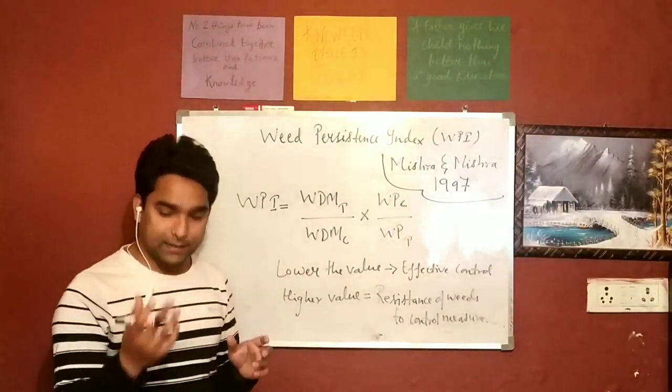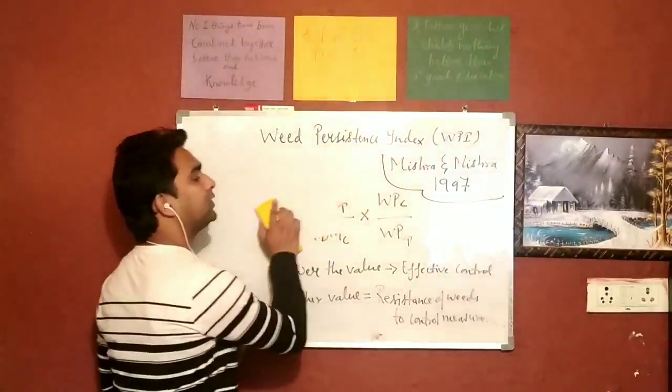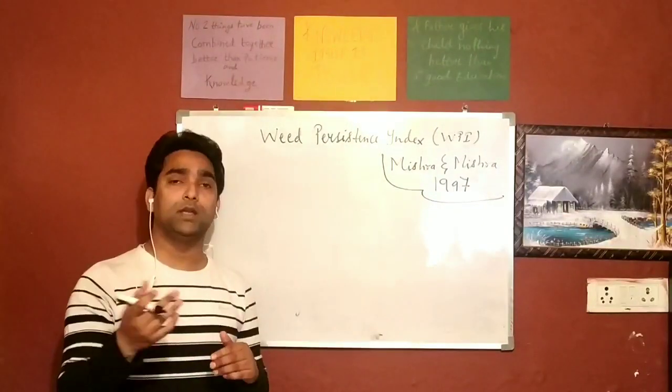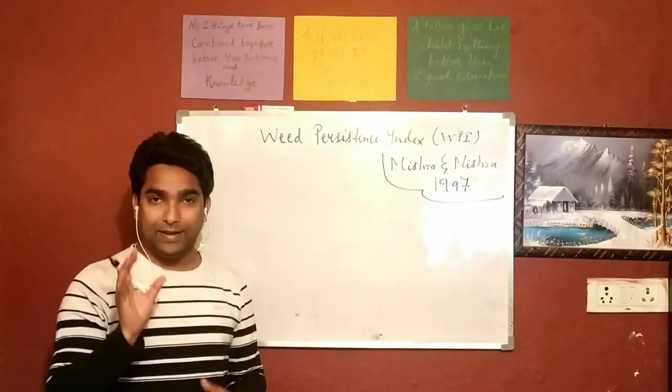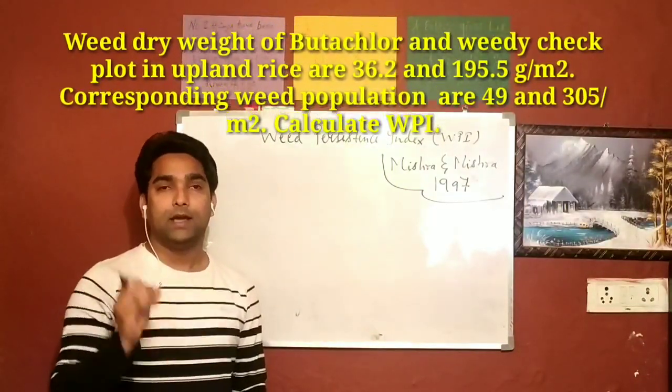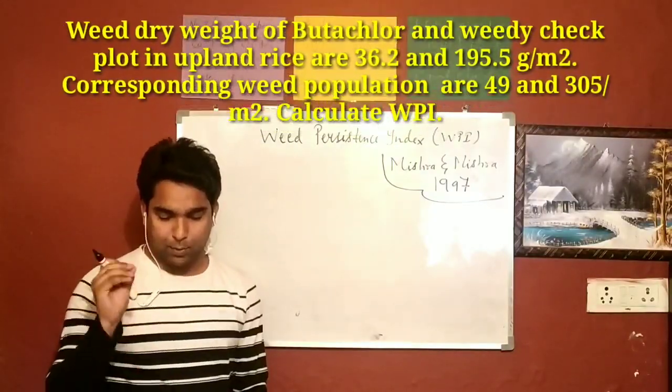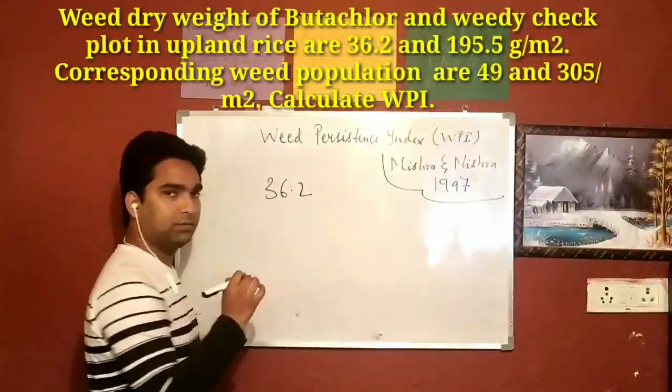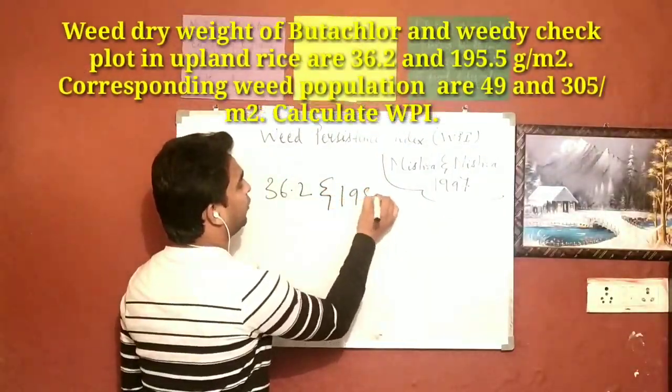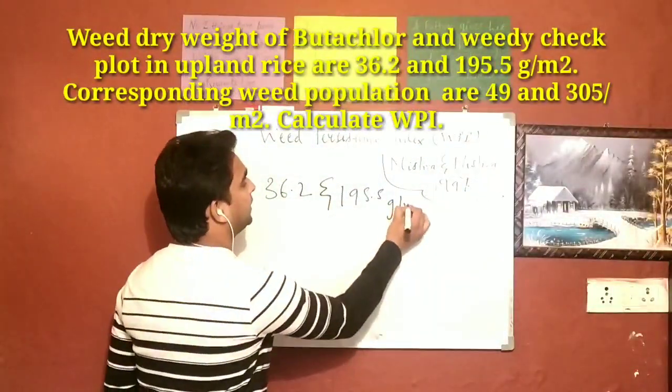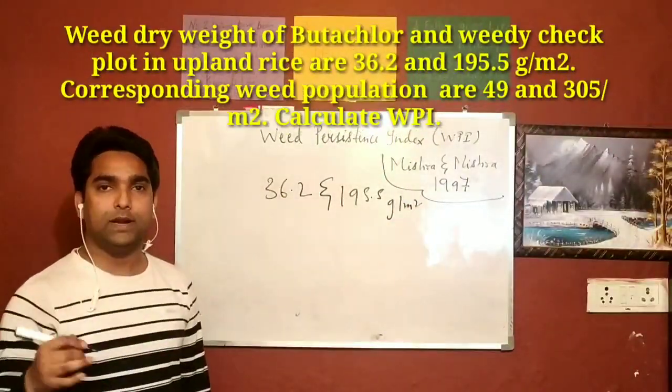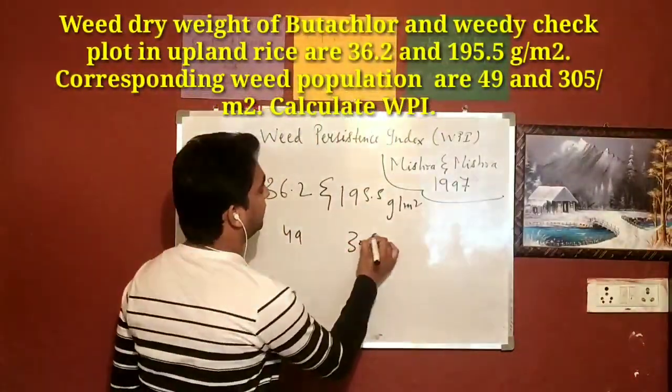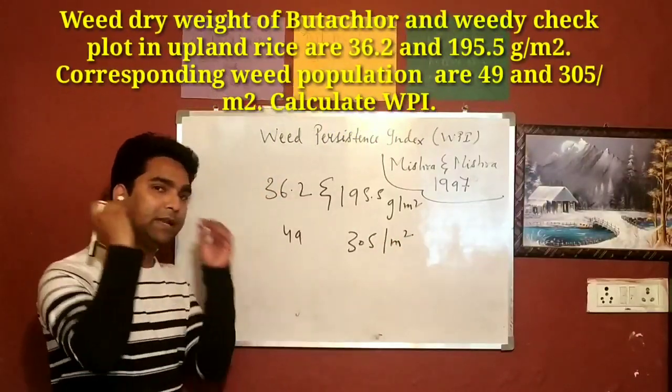So now let us talk about the numerical part. Let's see on your screen the numerical problem. So the weed dry weight in the butachlor and weed check plot in the upland rice are 36.2 and 195.5 gram per meter square, and the corresponding weed population is 49 and 305 per meter square. So you have been given all the values.